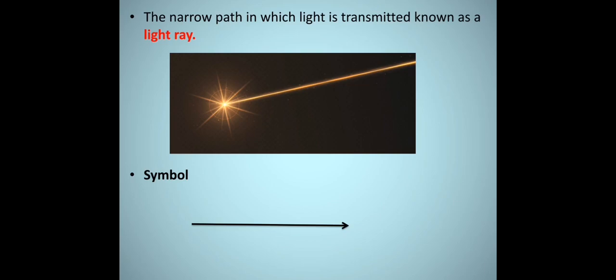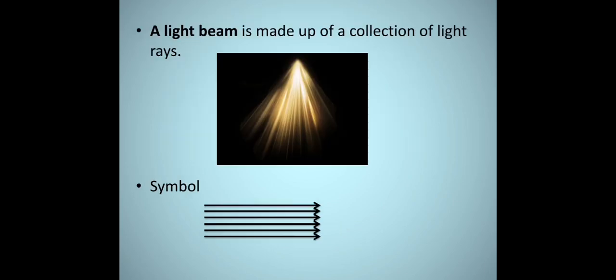The narrow path in which light is transmitted is known as a light ray. We use a straight line with an arrowhead as the symbol for a light ray. A light beam is made up of a collection of light rays. We use parallel lines with arrowheads to indicate a light beam.